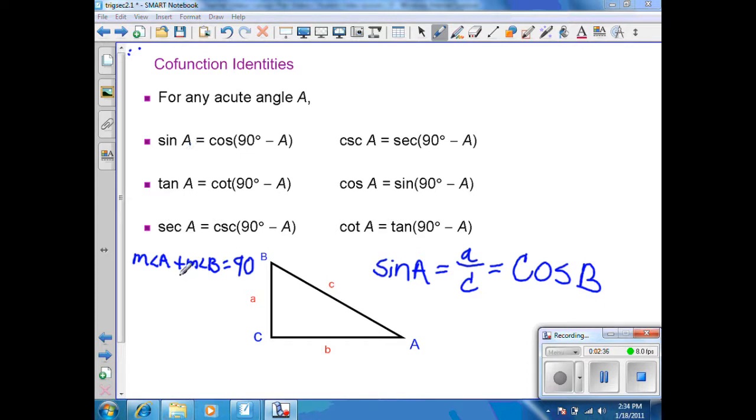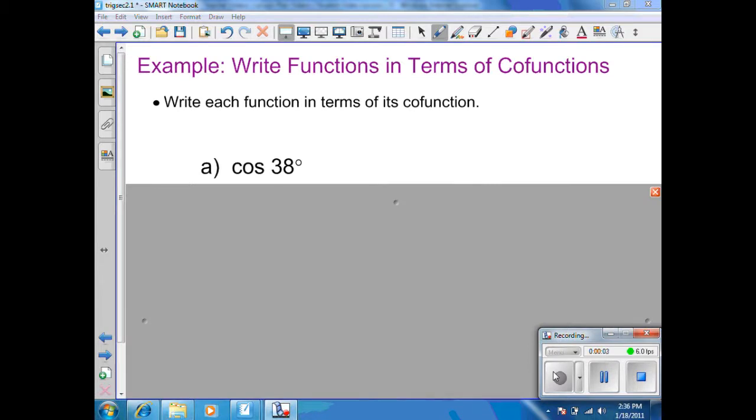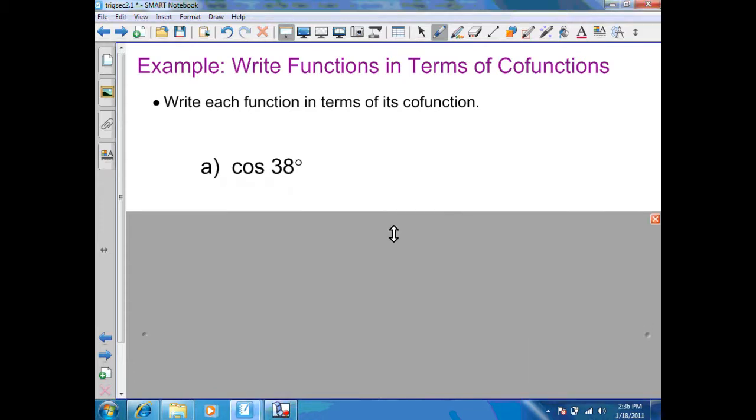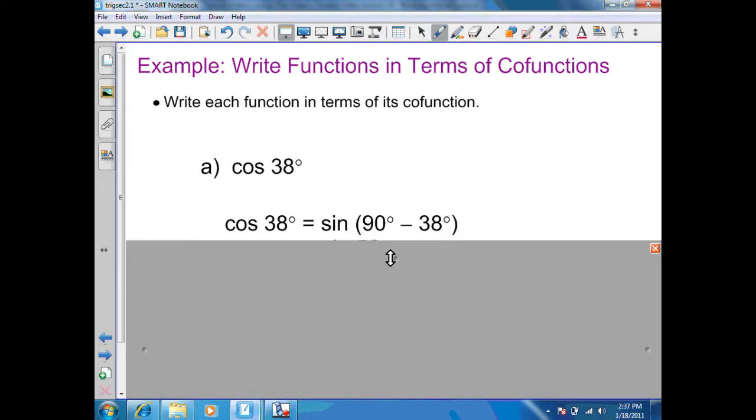In this example, we want to write each function in terms of its cofunction. Our first one is cosine of 38. Recall from the last slide that its cofunction is sine and also recall that we need to find the complement of the given angle. So here, we have the cosine of 38 equals 90 minus 38. Therefore, the cofunction of the sine of 38 is the sine of 52. And in this situation, I will have the same value given.